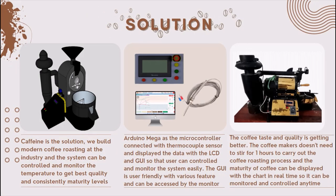We build a modern coffee roasting system at the industry level. The system can control and monitor the temperature to achieve the best quality and consistent maturity level. Arduino Mega serves as the microcontroller, connected with a thermocouple sensor, displaying data on an LCD and GUI so that users can control and monitor the system easily. The GUI is user-friendly with various features and can be accessed via monitor.